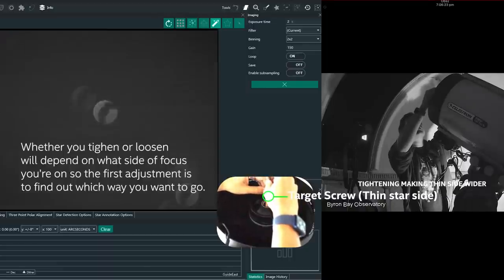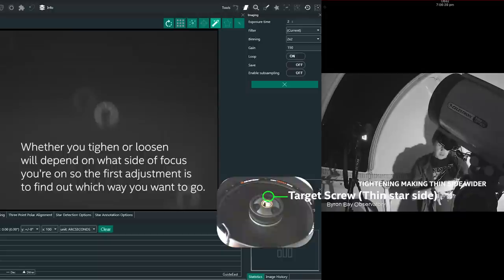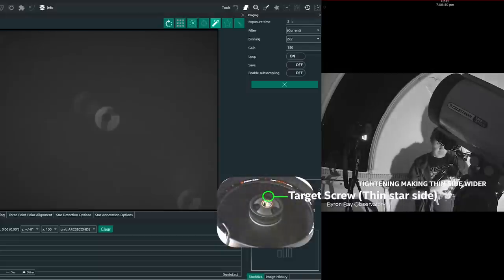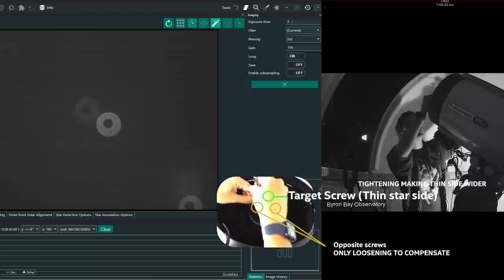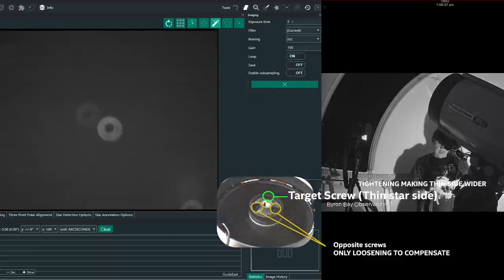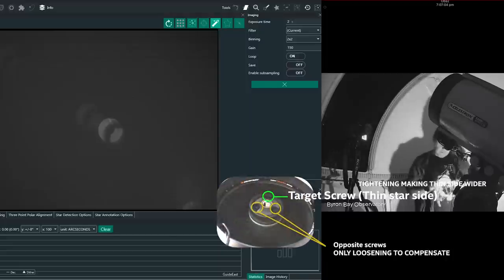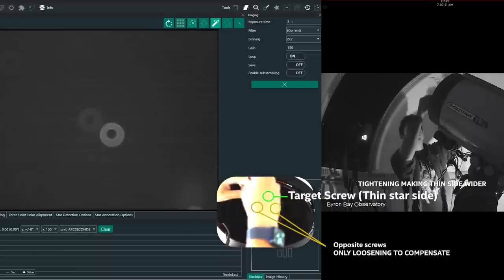So we actually need to tighten. So when the band is small on one side of the star, we actually need to tighten. And a little more. Okay. And what I'm going to do is loosen off just a touch, one-tenth, those other two screws on the opposite side. And tighten.